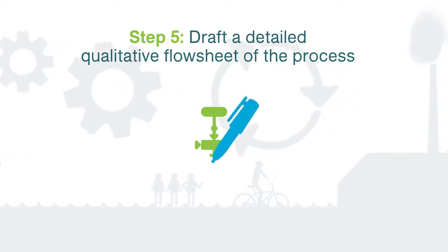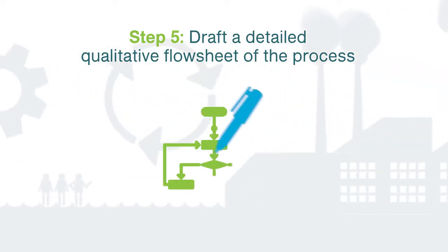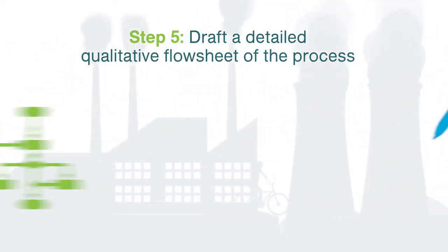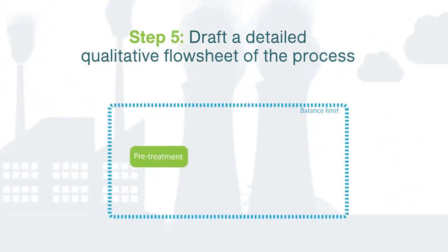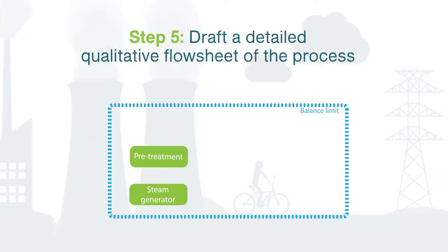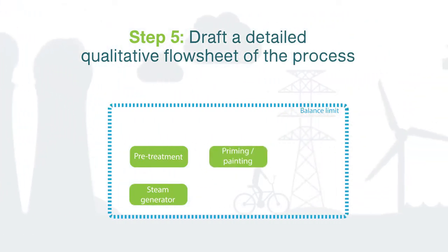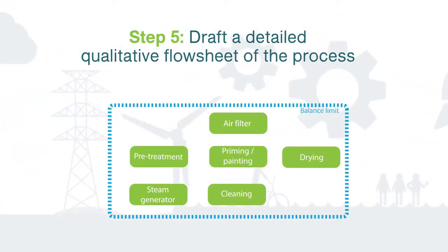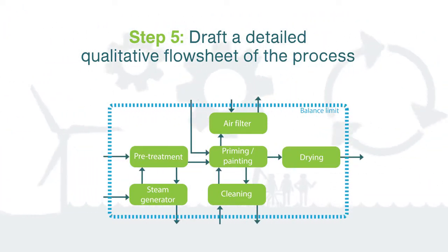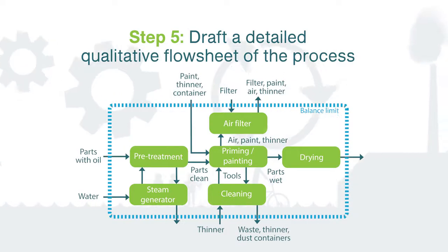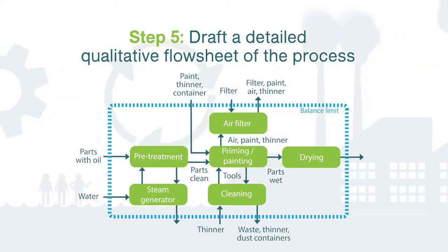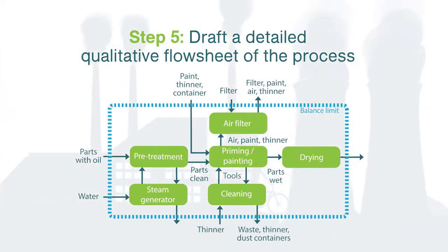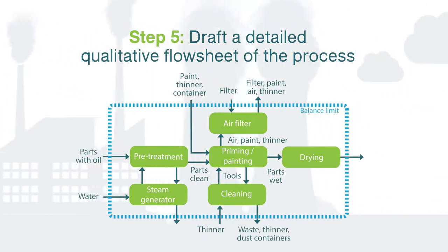Step 5: draft a detailed qualitative flow sheet of the process. Indicate the boundaries and represent the process steps with rectangles. Use arrows to show the material and energy inputs, and the outputs of products, materials and waste.